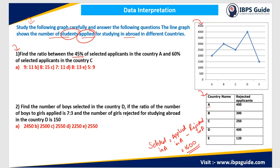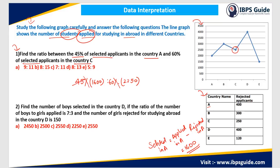Question 1: Find the ratio between 45% of the selected applicants in country A and 60% of the selected applicants in country C. We have already found selected in country A equals 1600. Now we have to take the ratio of 45% of 1600 to 60% of selected applicants in country C. In country C, total students who applied is 2500 and rejected is 250. So selected in C equals 2500 minus 250 equals 2250. The percentage values cancel, leaving us with 3 × 160 to 4 × 225.